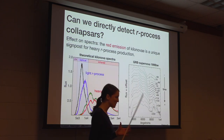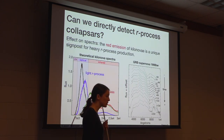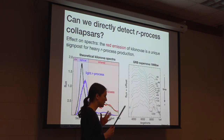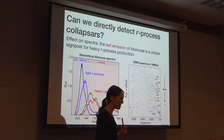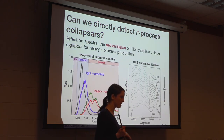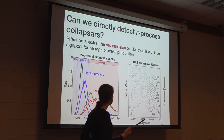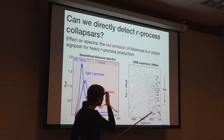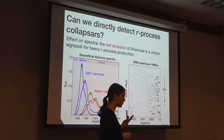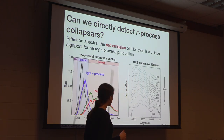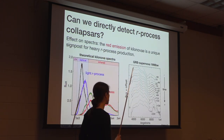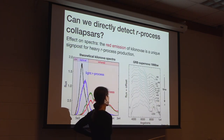Fortunately, luminosity is not the only tool we have. We can also think about colors and spectra. Red-end emission is a pretty strong signature of R-process enrichment, so it makes sense to look at the spectra of GRB supernovae and ask whether they show signs of this red-end emission. We are lucky to have already a couple of decades of data on GRB supernovae that we can look at.